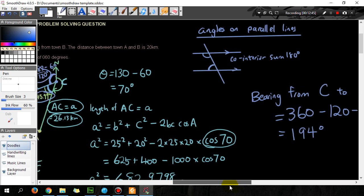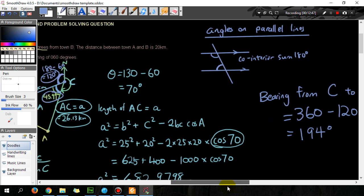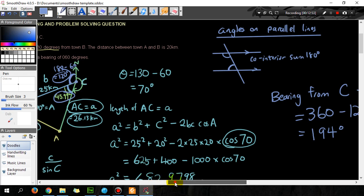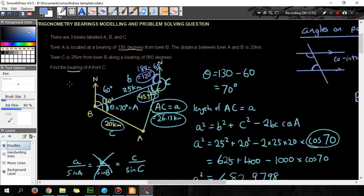I hope that helps you guys solve the problem. So bearing C is 194 degrees. Sorry, bearing of A from C. So from C, from point C to point A, the angle here is 194 degrees. Thanks for watching guys, see you next time.